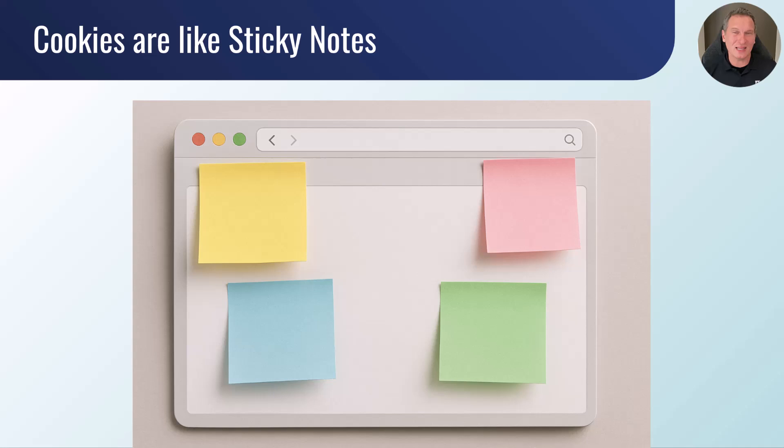Here's an analogy that I like to use. The easiest way to understand cookies is to think of them as sticky notes for your web browser. Websites use them to remember information about you. Imagine you visit a website and you set it to dark mode. A first party cookie is like a sticky note that you leave on your computer that says, this person prefers dark mode. So the next time you visit the site, it automatically displays dark mode and remembers your preferences. That's basically what cookies are meant to do.